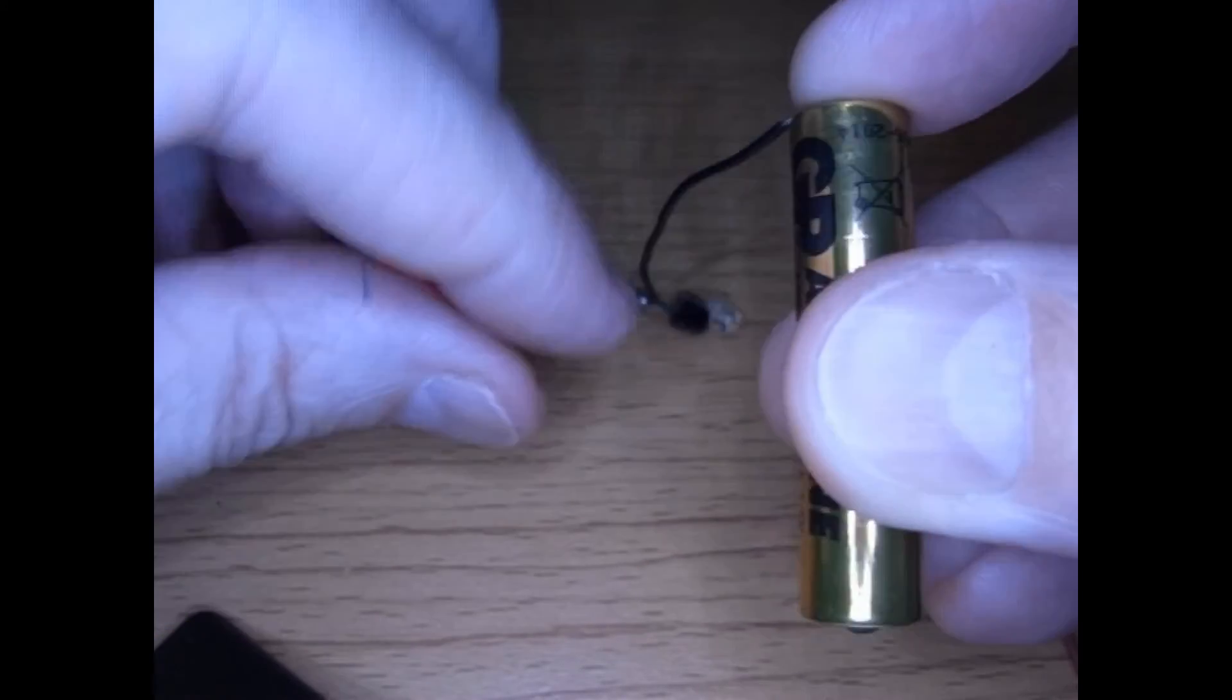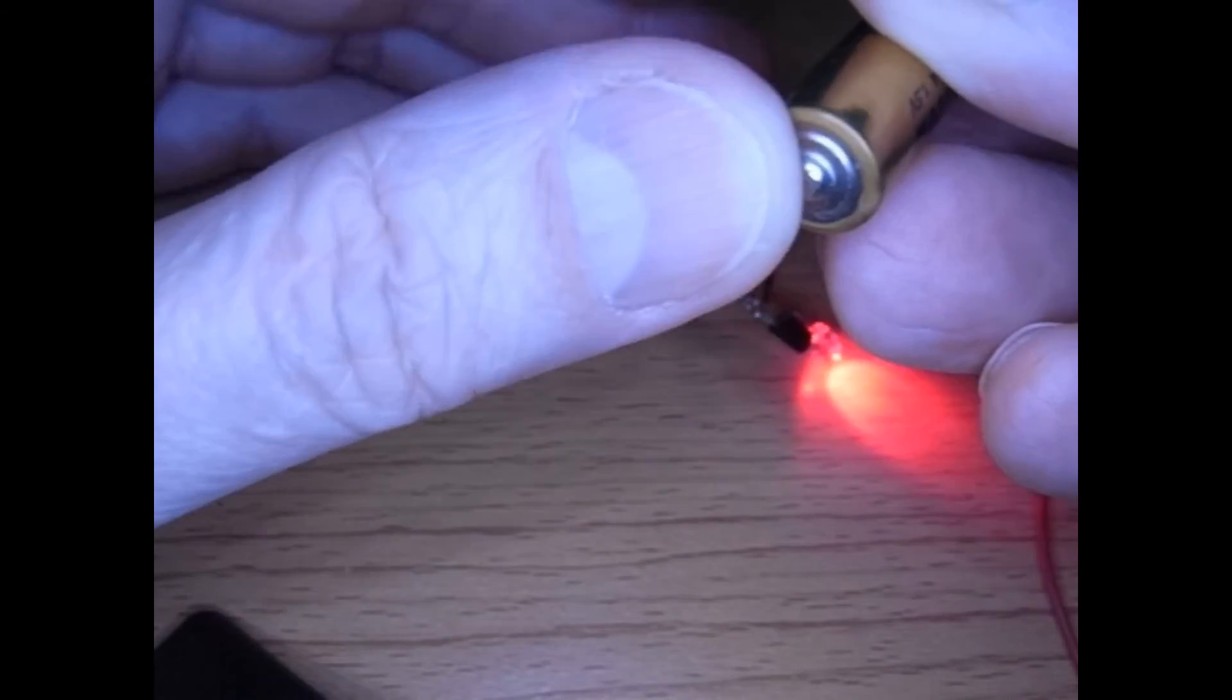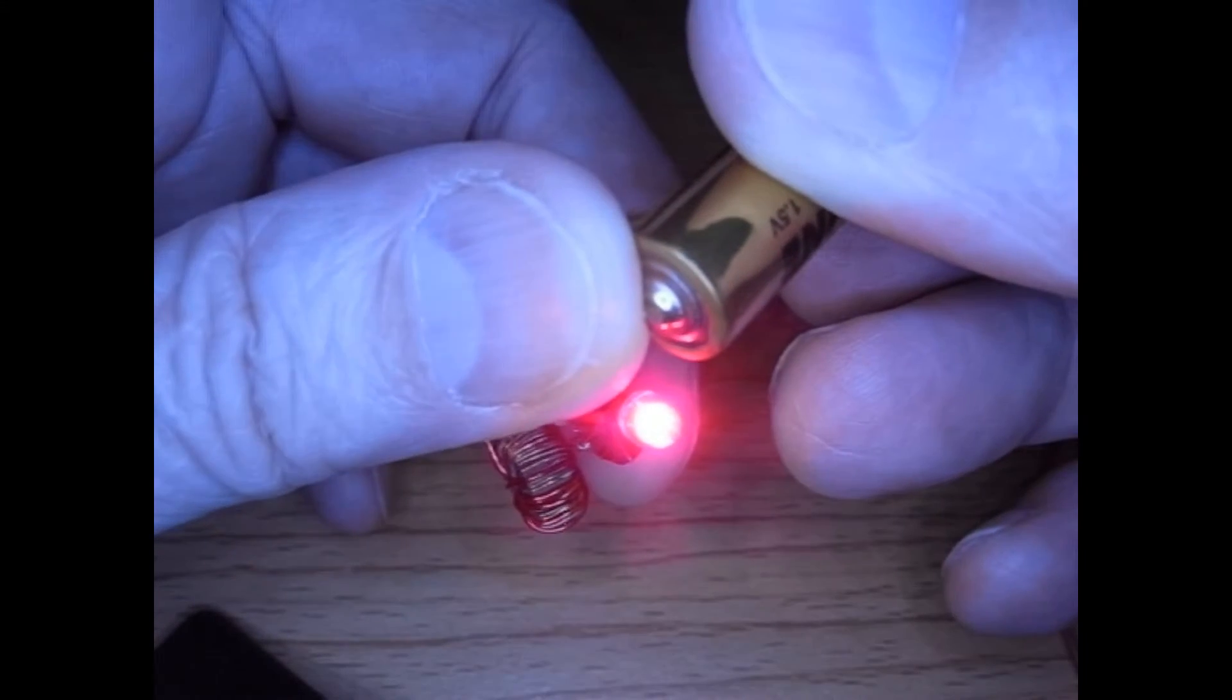Okay, if I can get it on there. And there's the Joule Thief lighting up from the dead battery. Okay, so that's kind of our baseline.